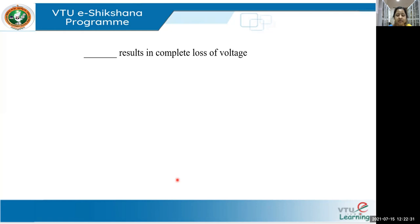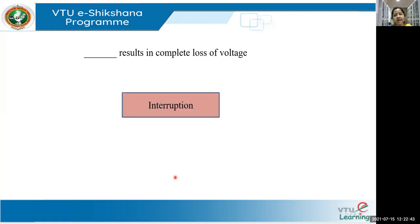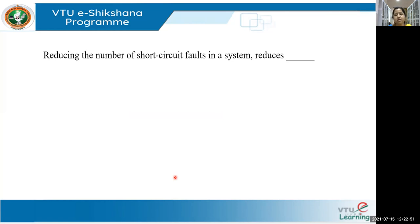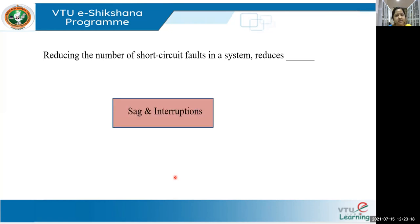Question two: What results in complete loss of voltage? It's called an interruption. Question three: Reducing the number of short circuit faults in the system reduces what? Since short circuit faults are the major cause, reducing them will reduce the number of sags and interruptions — as simple as that.